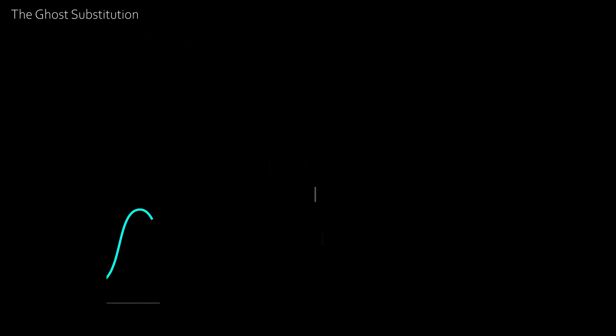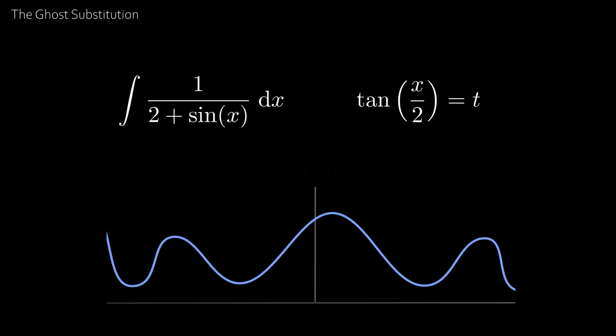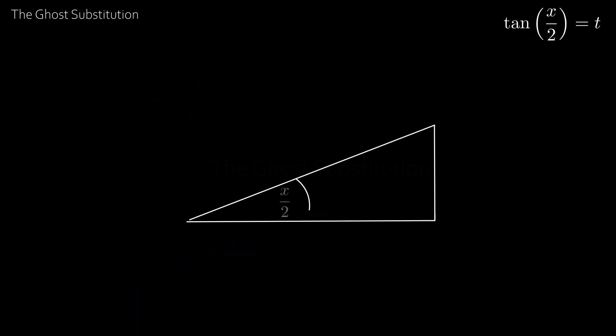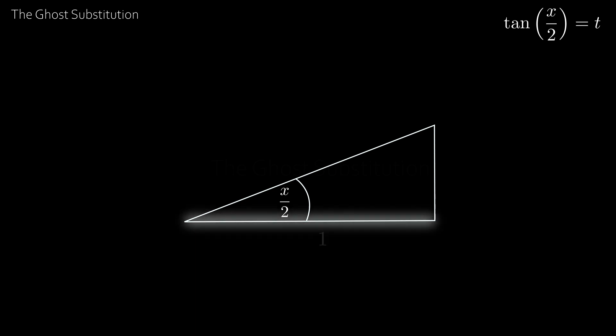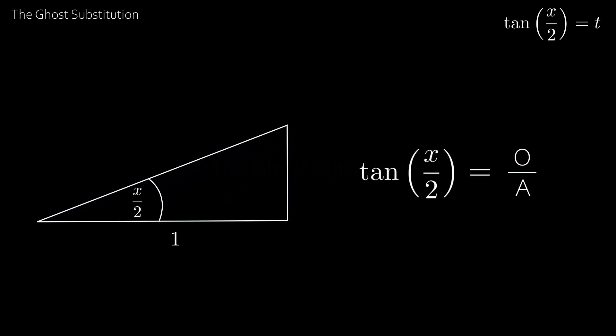So say you wanted to find the integral of 1 over 2 plus sine x, then the ghost substitution converts this difficult integral into a simple one. And to see how it works, let's take a triangle with angle x over 2 and adjacent length 1. Then by definition, tan x over 2 is the opposite length.